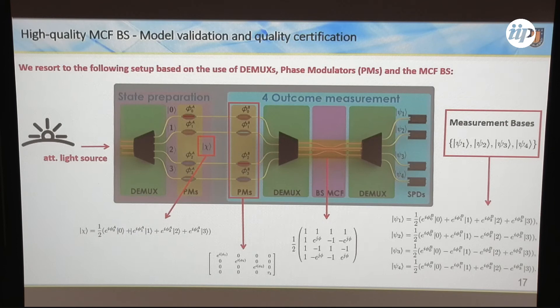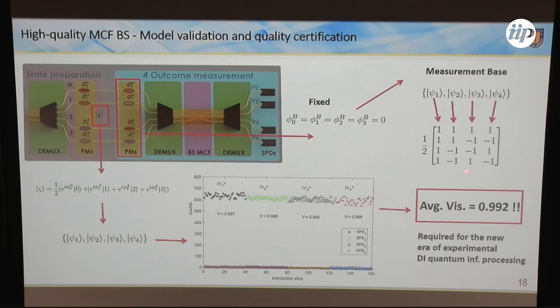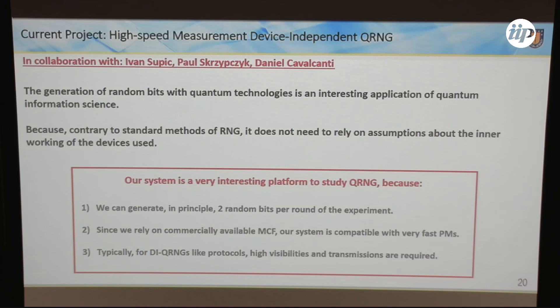In our experiments, in 0.1 seconds we have 7 million detections — this is an interesting application for quantum key distribution and random generation. The overall transmission is really high at 80%, because every component we are using is fabricated for classical telecommunication and so they are almost perfect. I can fix the measurement base and test the optical quality of the setup by sending states corresponding to the measurement base states, getting very high contrast and very high visibilities. This is required for some quantum information protocols, especially those based on the device-independent approach. We have also demonstrated quantum tomography with mutually unbiased bases, obtaining good fidelity.